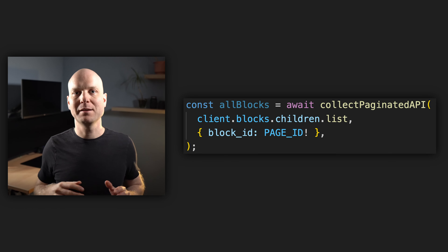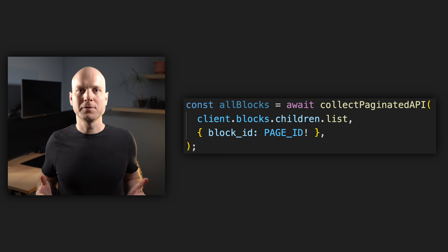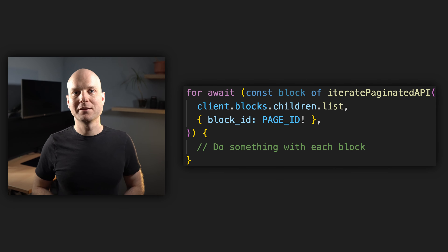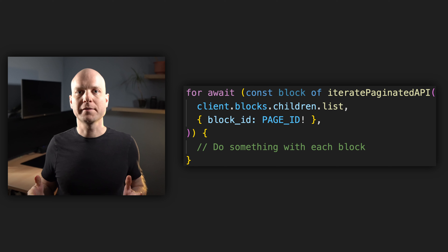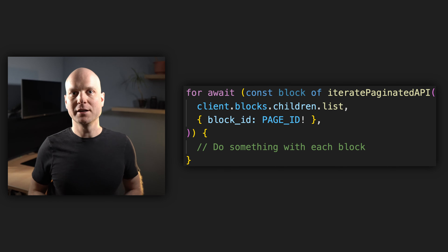So how can we iterate through paginated APIs? In the Notion API there are two helper functions. The collectPaginatedAPI helper will return all the results in an array. But if you want to save memory, you can also use the iteratePaginatedAPI helper, which is an async generator that allows you to visit each single item. This makes paginating the APIs very easy.